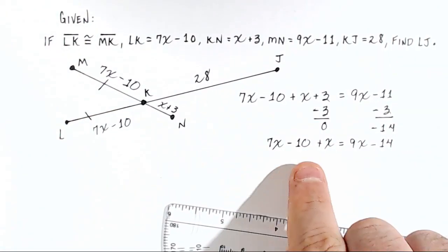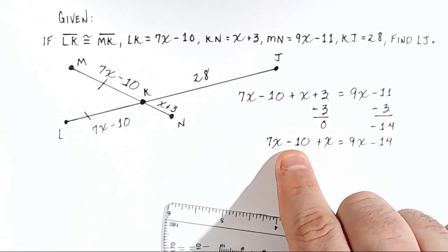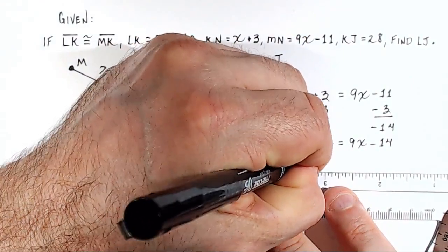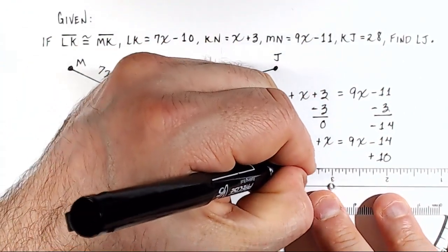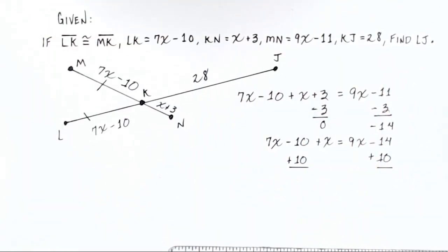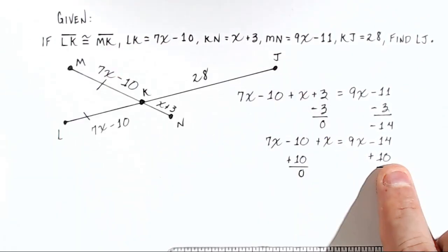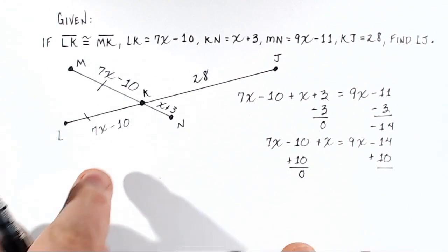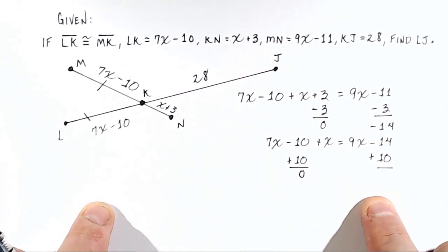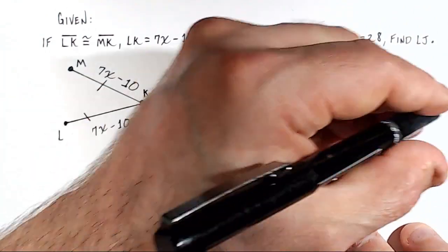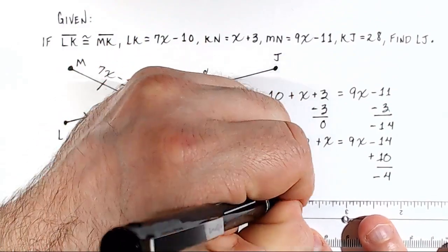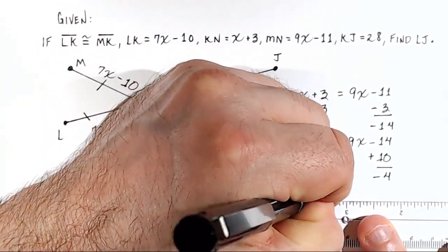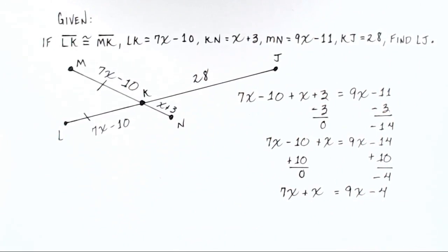Next, let's move the negative 10 to the right side by adding 10 to both sides. Negative 10 plus 10 is 0, and negative 14 plus 10 is negative 4. Rewriting: 7x plus x equals 9x minus 4. This problem is just getting simpler and simpler.